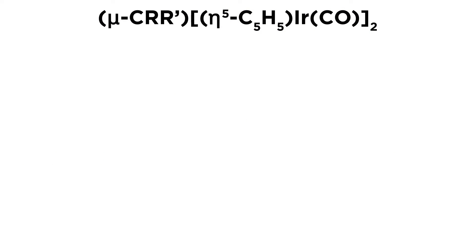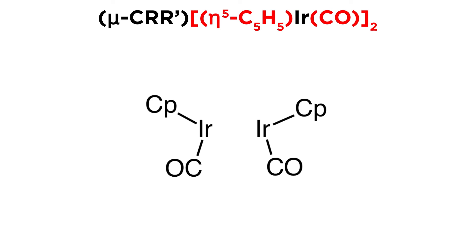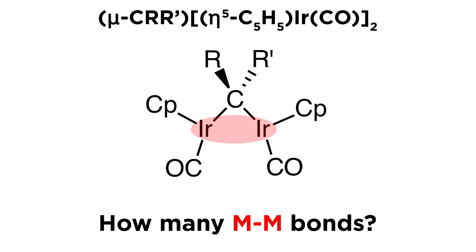Now that we understand how this works, let's look at a few chemical formulae for polynuclear complexes and see if we can predict the structure, presuming that the metals are coordinatively saturated. This first one has a bridging alkylidene ligand, and then we see an iridium center bound to a Cp ligand and a carbonyl, and because of the brackets here, we see that there are two of these. With this information we can start to put together the structure, since we have two iridium atoms, each with the two ligands, and we can also place the bridging ligand. We simply have to figure out how many bonds are between the metals.